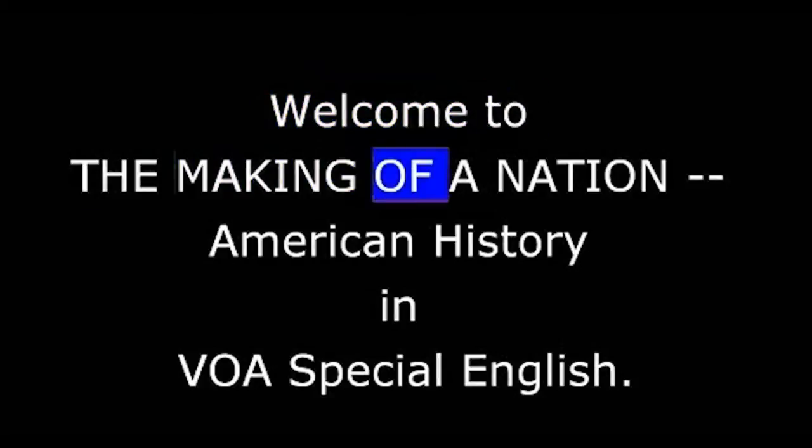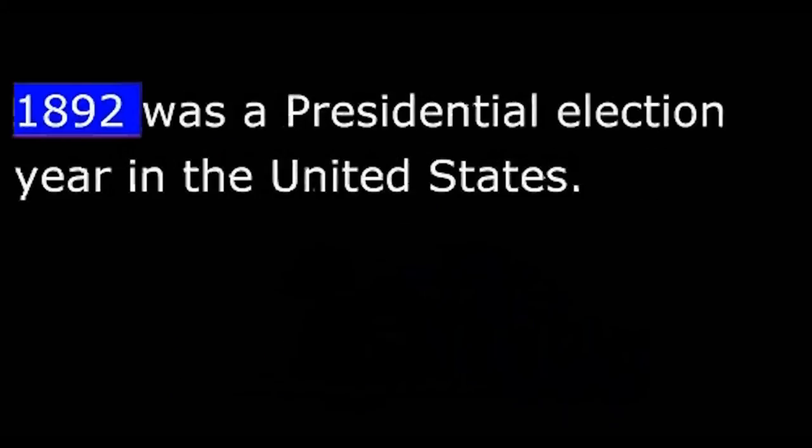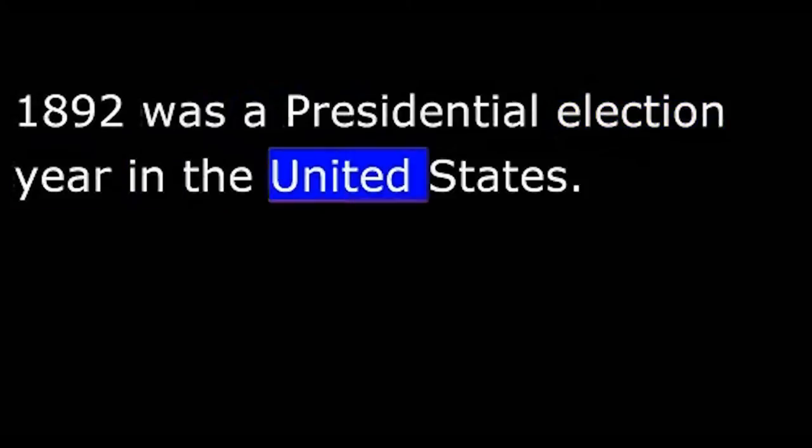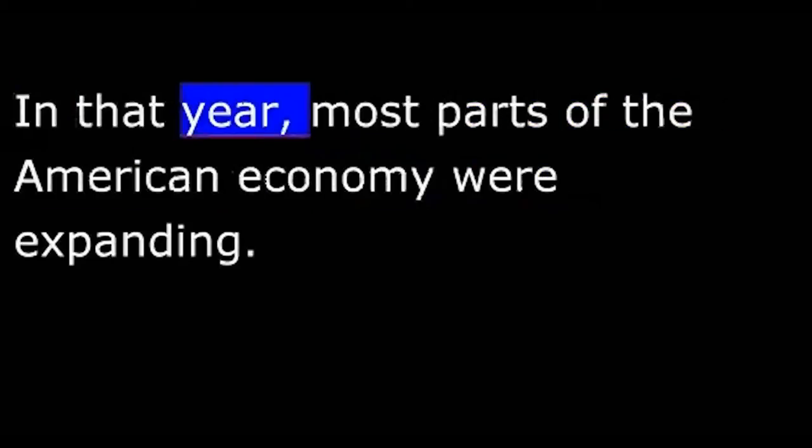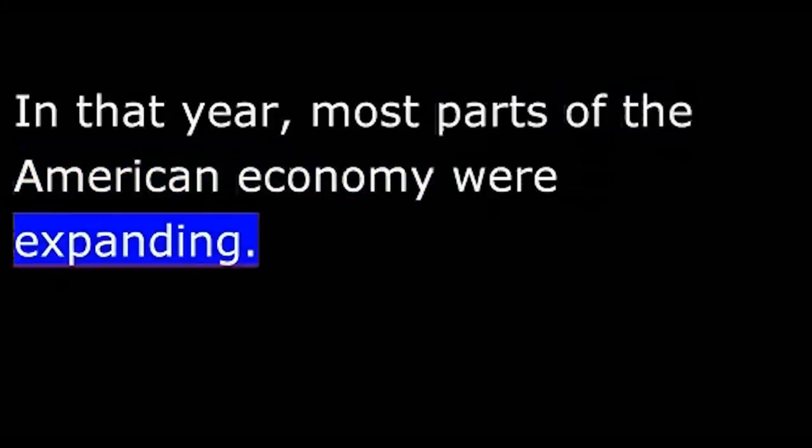Welcome to The Making of a Nation, American History in VOA Special English. 1892 was a presidential election year in the United States. In that year, most parts of the American economy were expanding. But one part was not doing well: agriculture.